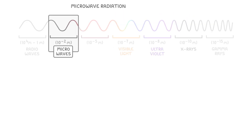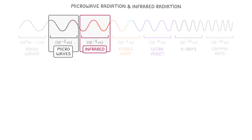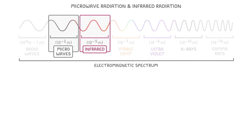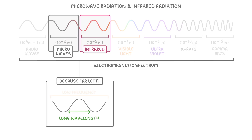Today's video is focused on microwave radiation and infrared radiation, which are the second and third groups in our electromagnetic spectrum. Because they're both on the far left of the spectrum, they're both going to have relatively long wavelengths and low frequencies.